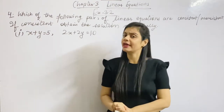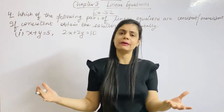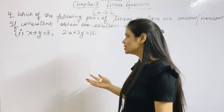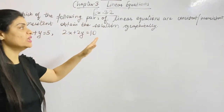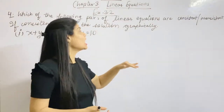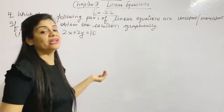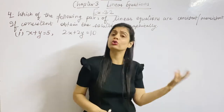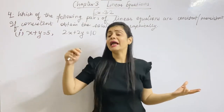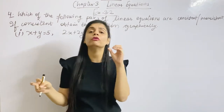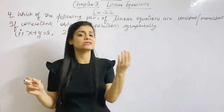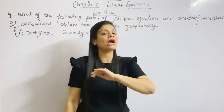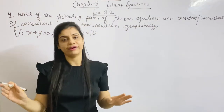The 4th question is going to be very easy. It has 4 parts. The question asks which of the following pairs of linear equations are consistent or inconsistent? And if consistent, then obtain the solution graphically. Consistent means either unique solution or infinitely many solutions. Inconsistent means no solution.